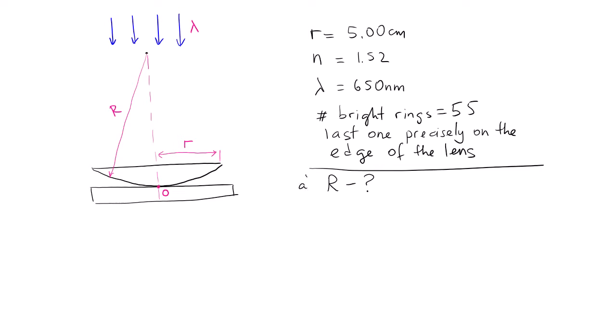So let's call this part A and then part B. What is the focal length of the lens? To solve for the radius of the curvature of the lens, we need to use the phenomena of interference and especially that the last ring, last bright ring is on the edge.